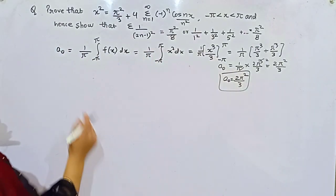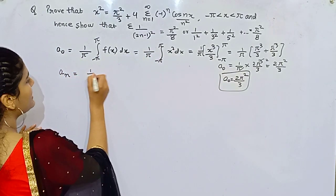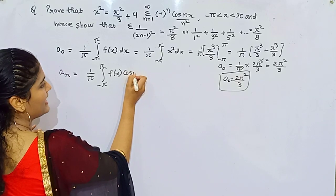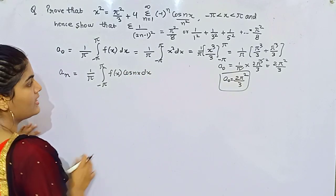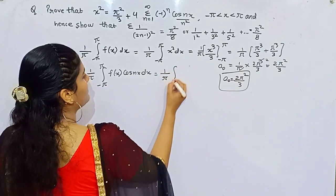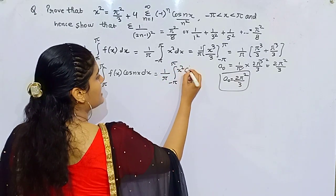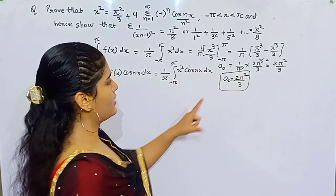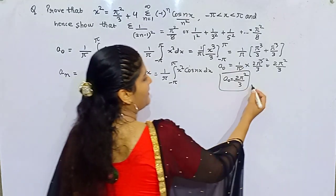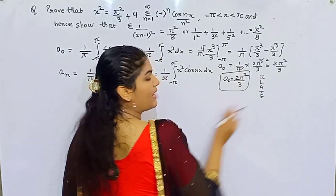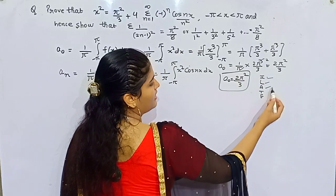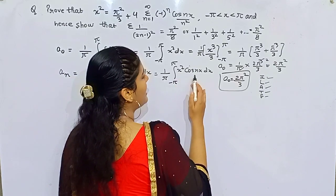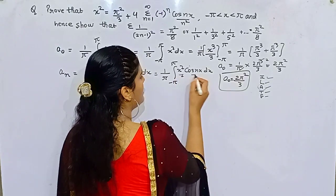Now coming to AN. Your AN is 1 by pi, integral from minus pi to pi, of f(x) cos(nx) dx. Your f(x) is x squared, so we integrate x squared cos(nx) dx. How can you integrate it? You can see this is the product of two functions, so you can apply integration by parts using ILATE: Inverse, Logarithmic, Algebraic, Trigonometric, Exponential. This is algebraic and this is trigonometric, so algebraic should be first.